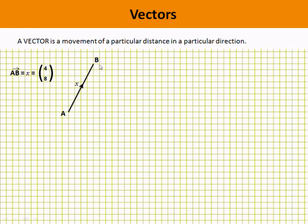If we wanted the same thing going in the other direction from B to A, we could call it BA with an arrow on top, or we could call it minus X because it's going backwards down X, or we could call it minus 4, minus 8, because it would go four backwards and eight down to get from B to A.